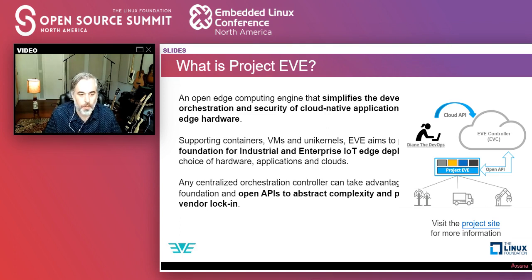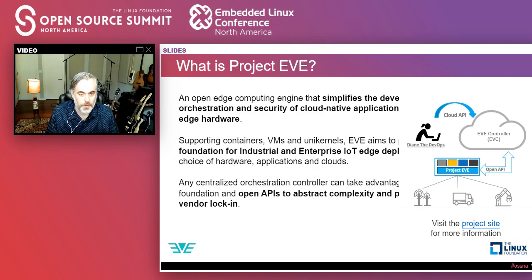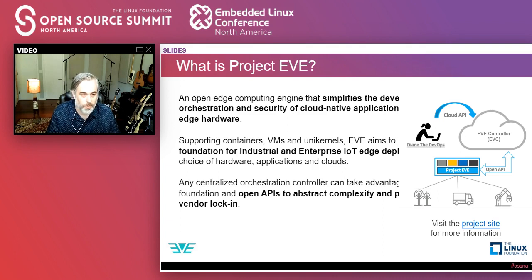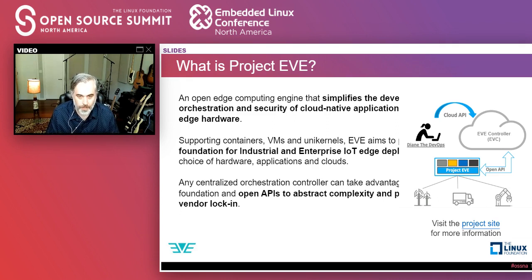At a high level, what is Project EVE? Think of EVE as a bare metal computing engine — it's not about the applications itself, it's really about that lower-level device and application orchestration, the security of those devices. This could be running on an edge gateway, a server outside of a secure data center, or any kind of distributed compute. It supports VMs and containers — if you've got a legacy workload you want to run in a virtual machine, maybe a SCADA application or a point-of-sale system that runs on Windows, you can still run those, but you can also run modern containerized applications. We really want to be that universal foundation that provides extra networking and security benefits with your choice of hardware, applications, and clouds.